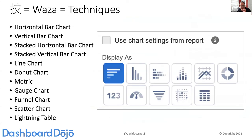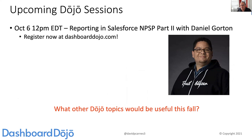We talked about all 11 different types of components today. In Classic, you could add a Visualforce page onto a dashboard — that's not available in Lightning, but we do have some really nice, compelling options in Lightning. We'd love to have you join us again. We have the upcoming dojo session on October 6th — Daniel Gorton will rejoin us to do reporting in Salesforce NPSP, the Nonprofit Success Pack, part two.